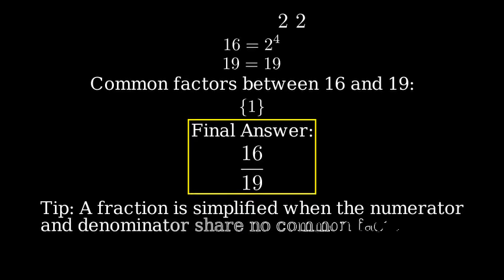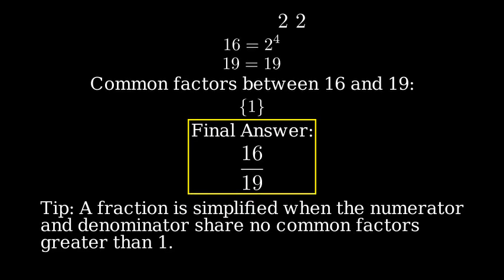Remember, when simplifying fractions, we're looking for common factors between the numerator and denominator. If there are no common factors greater than 1, then the fraction is already in its simplest form.